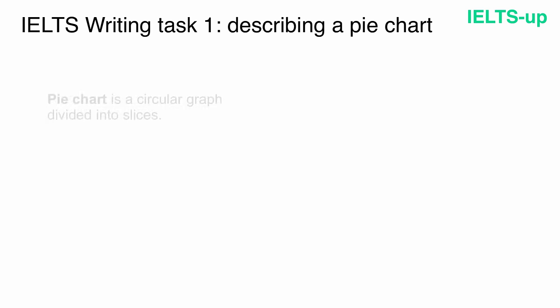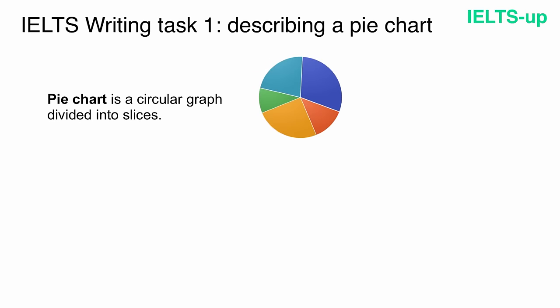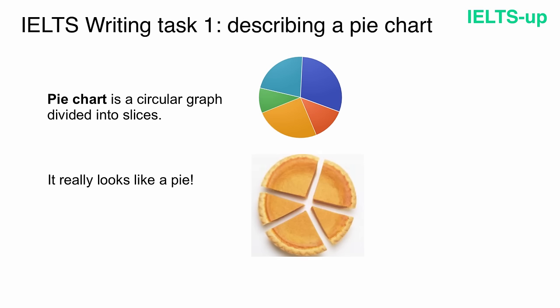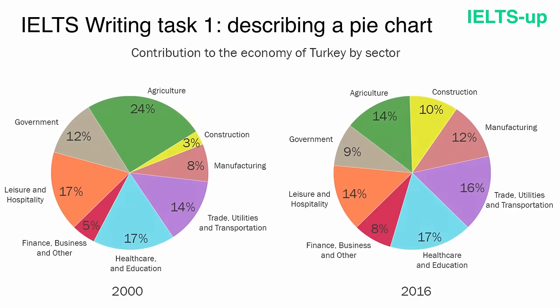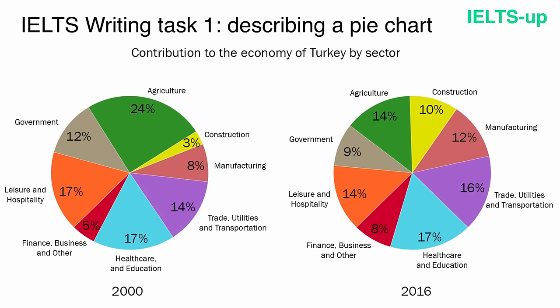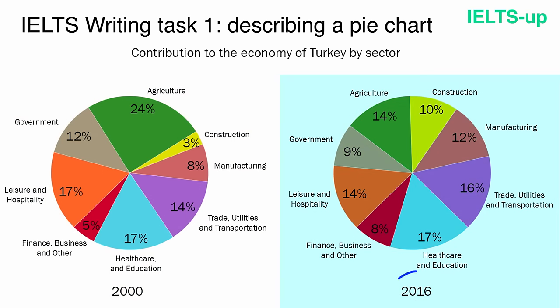As you know, a pie chart is a circular graph divided into slices — it really looks like a pie, which is where its name came from. Now let's return to our chart. The name of our chart is 'Contribution to the economy of Turkey by sector.' We have two pie charts: the first corresponds to the year 2000, and the second corresponds to the year 2016.